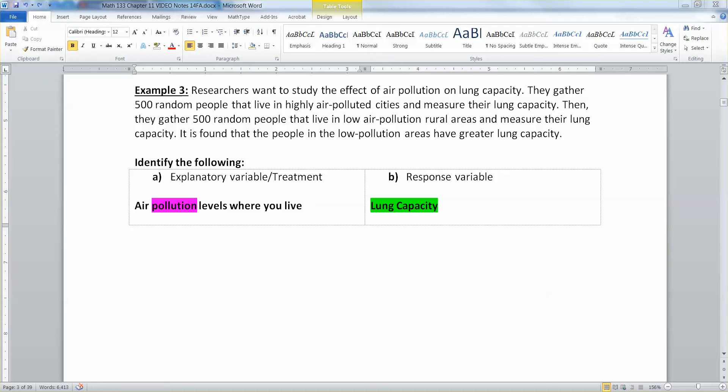Lung capacity means how much air you take in, right? So you might imagine that if you live in a low air pollution area, your lungs are not getting clogged up with so much garbage in the air. So you have greater lung capacity, greater ability to breathe in deeply.